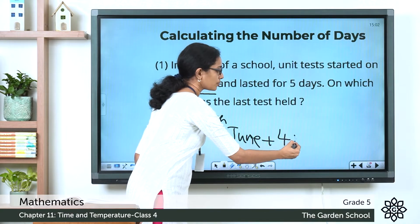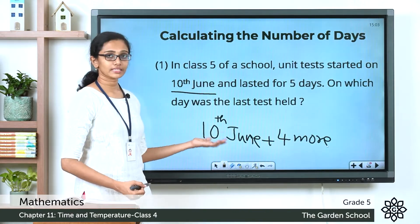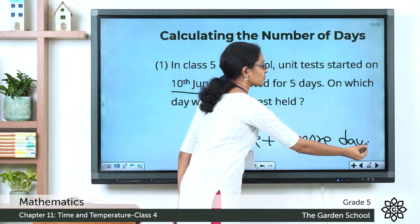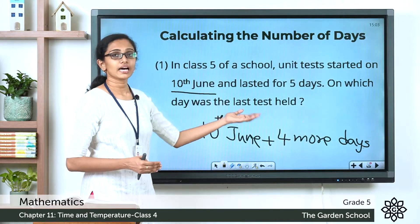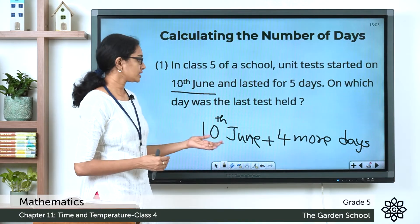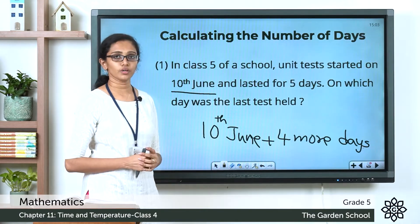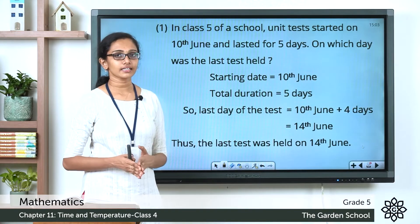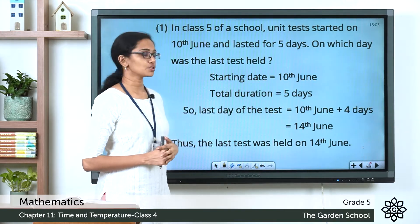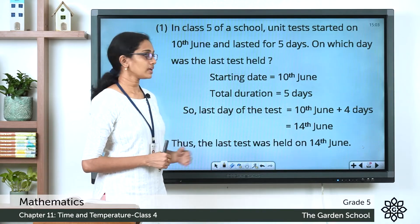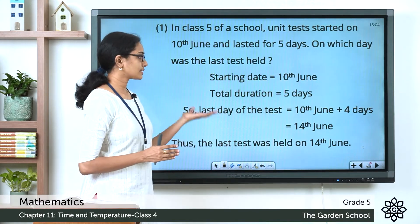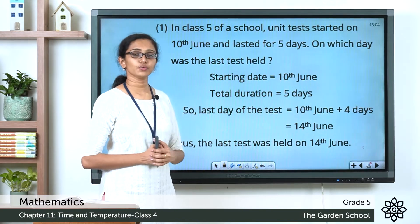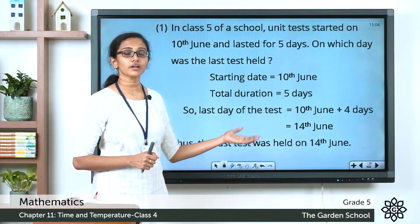It lasted for 4 more days. Day 1 of the exam was on the 10th of June and it lasted for 4 more days, and we are asked to find out on which date the last test was held. So how do we find it? Just add 4 more days to the 10th of June. The starting date was 10th June, the total duration was 5 days, so the last day equals 10th June plus 4 days, which equals 14th June.